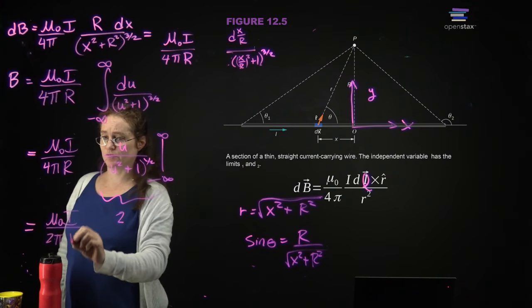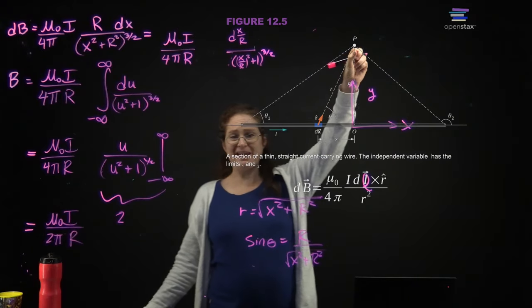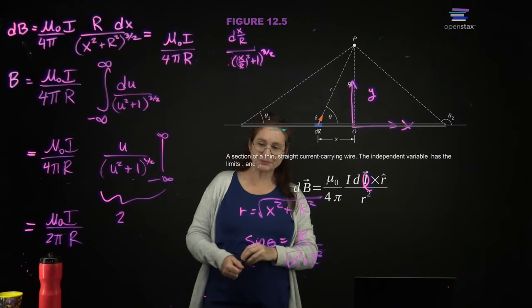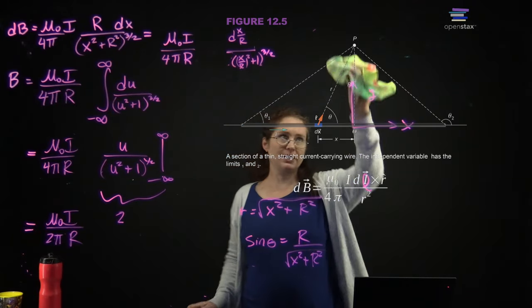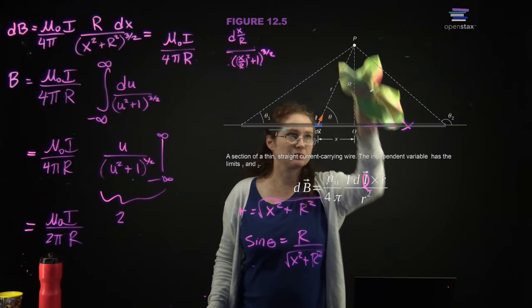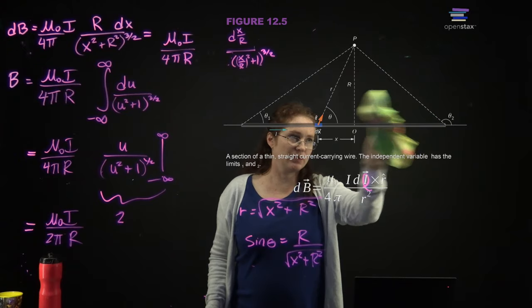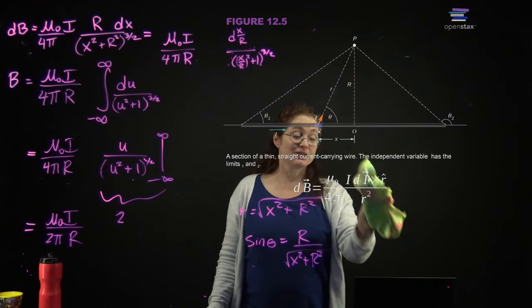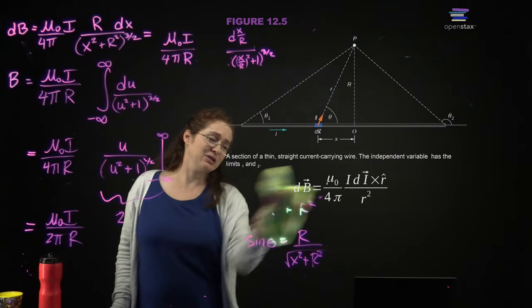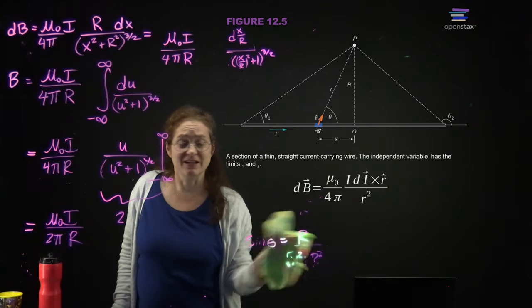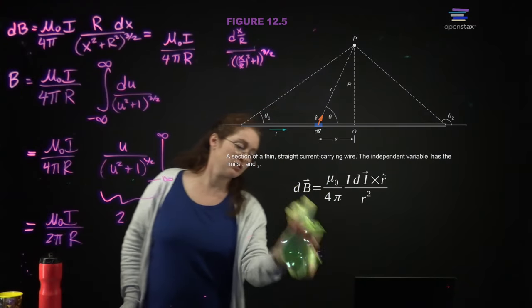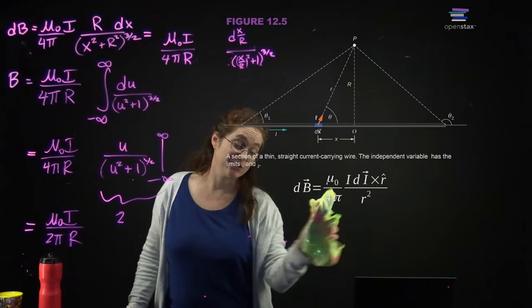So you get the answer that for an infinite wire, the magnetic field at a point P a distance R above the wire is mu-naught over 2πR. We will also later on learn another technique called Ampere's law — it's analogous to Gauss's law, where you use the symmetry of the situation and you don't have to do a horrible ugly integral. Sometimes remember: Gauss's law, Ampere's law.